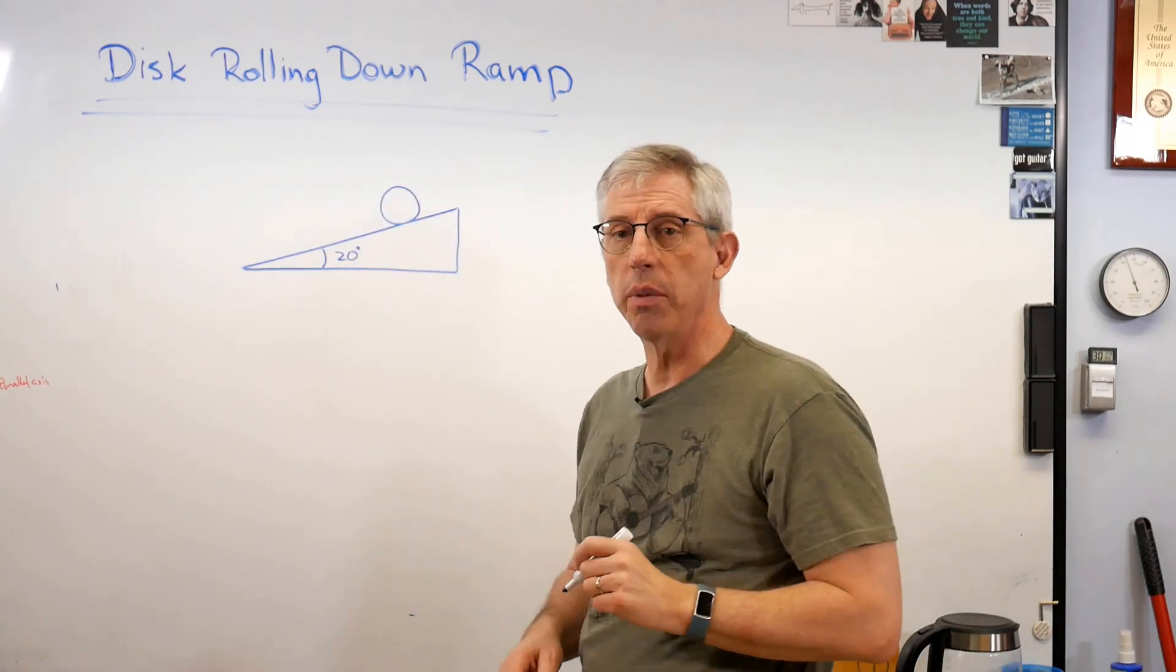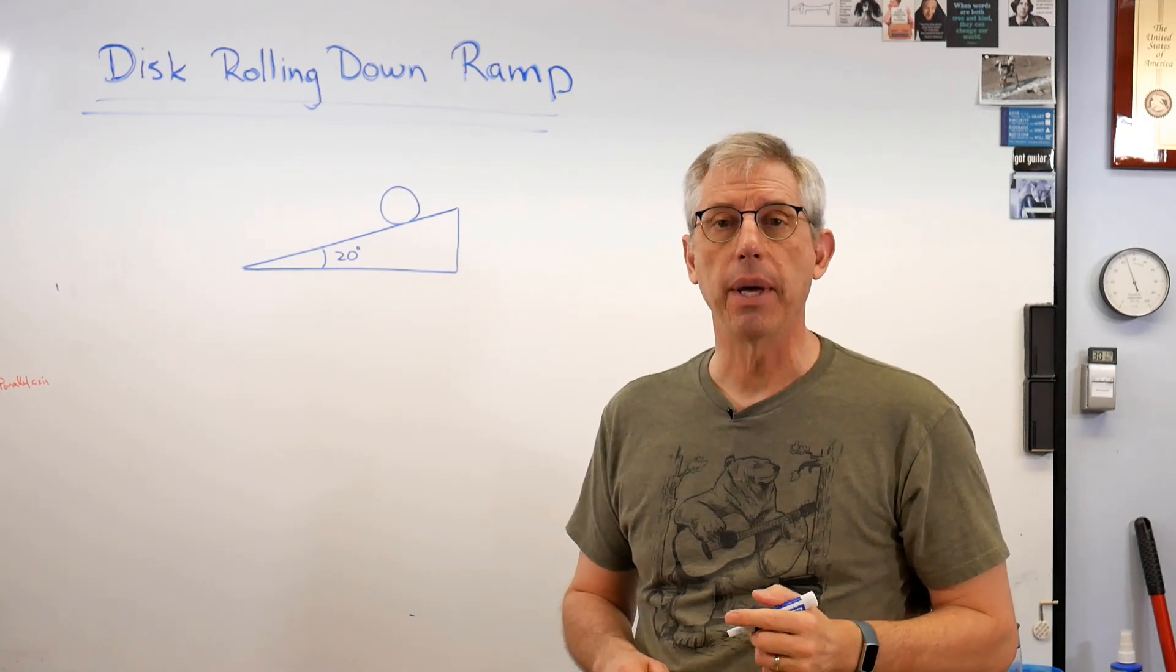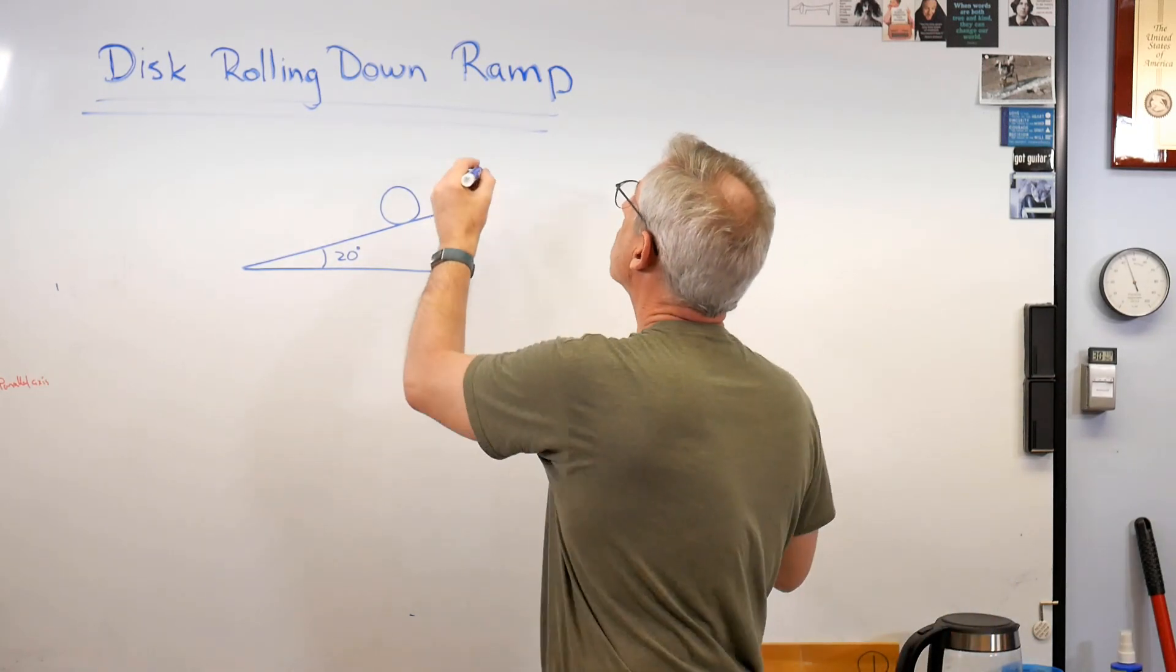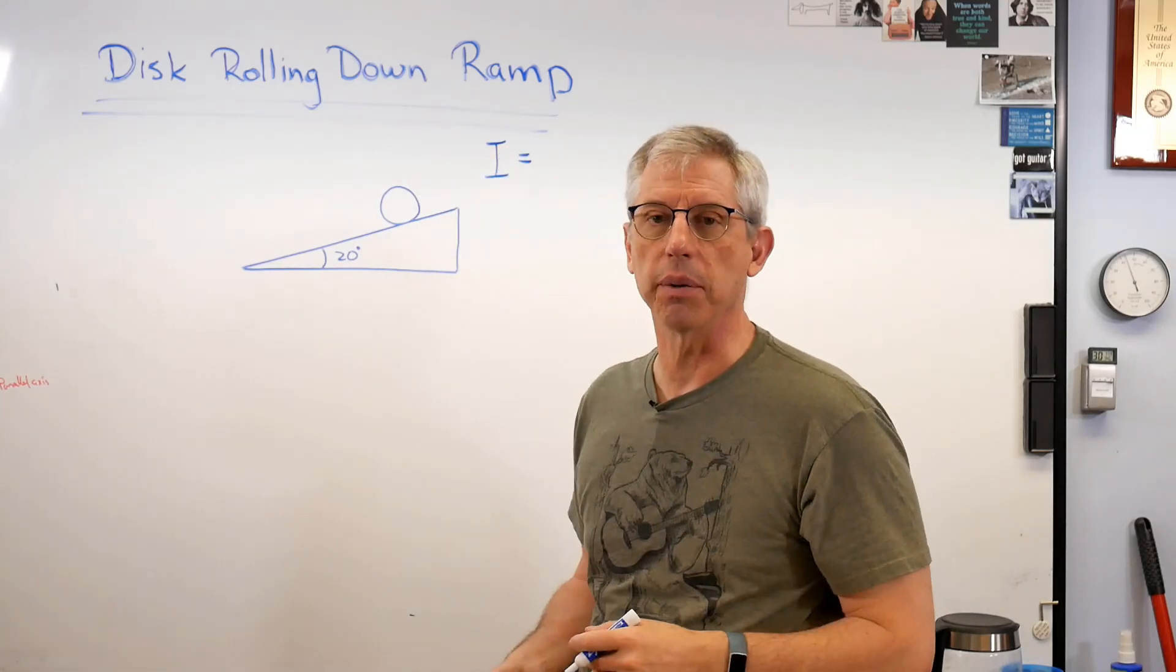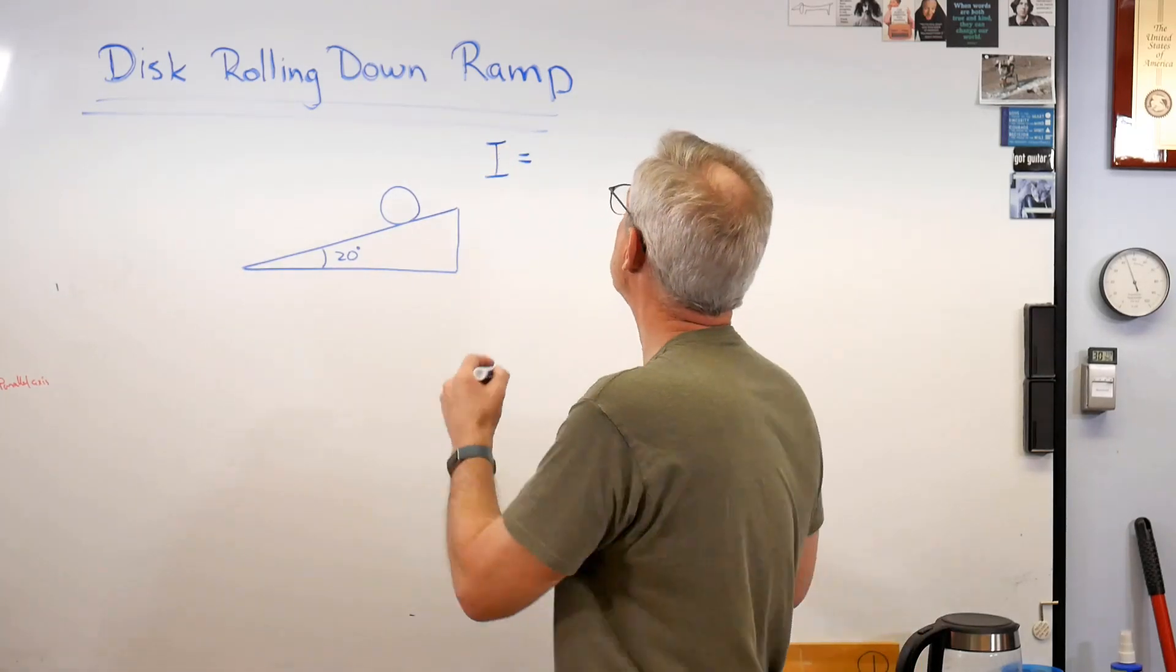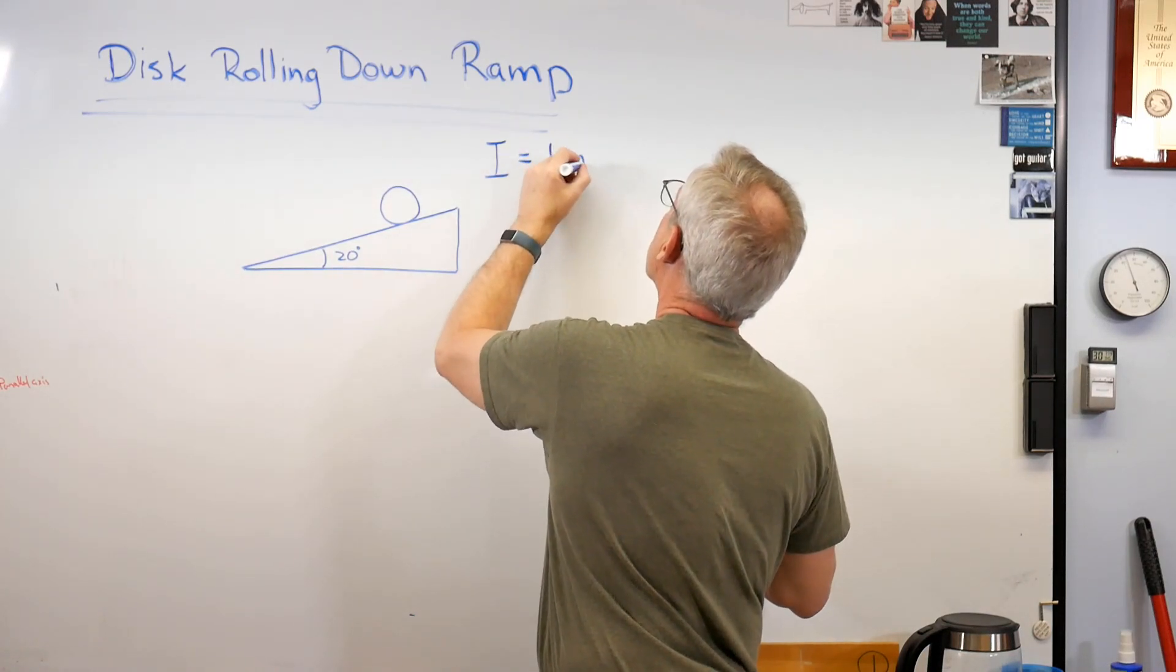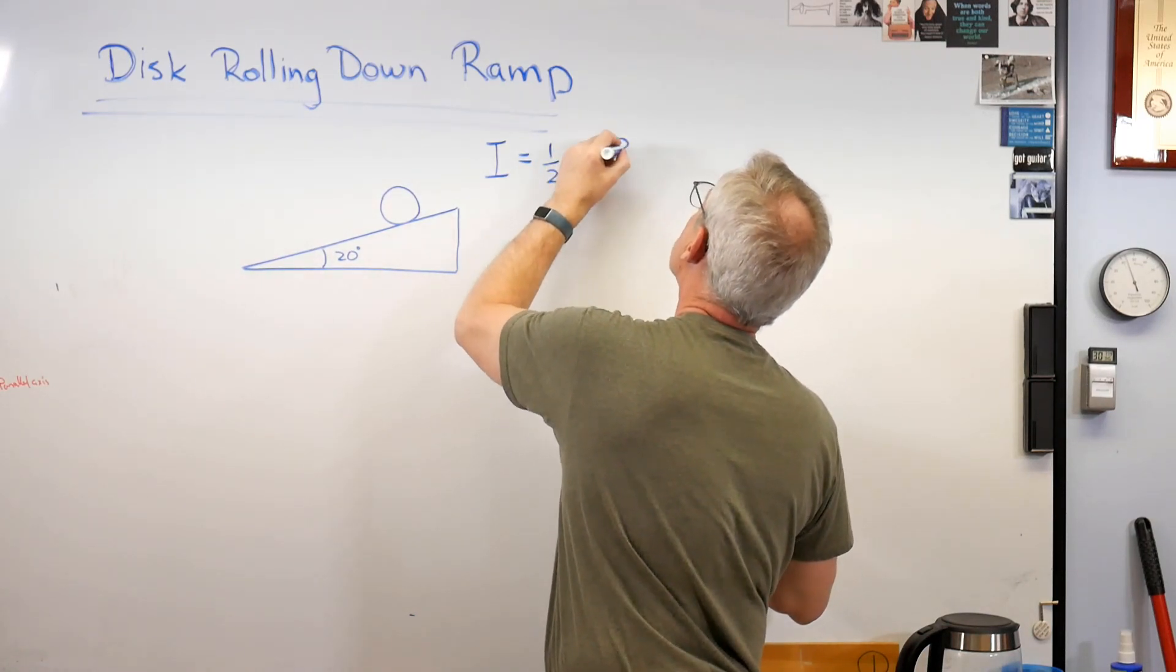Now, the mass moment of inertia of a disc is something you can go look up. And the mass moment of inertia, which is always called I. Now, why I? I don't know. Inertia, probably. There's 26 letters. Pick one. Somebody pick this.